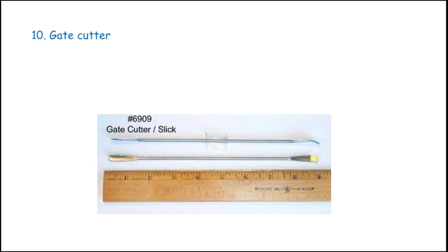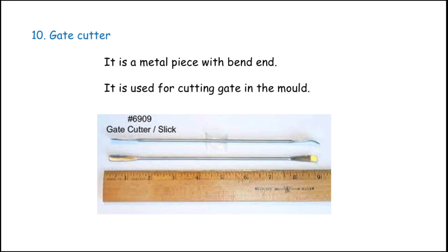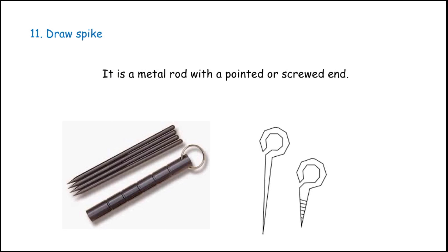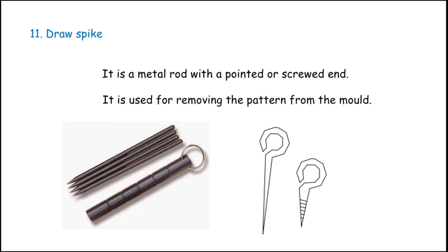The next one is the gate cutter. It is a metal piece with a bent end and is used for cutting the gate in the mold. The draw spike is a metal rod with a pointed or screwed end. It is used for removing the pattern from the mold.